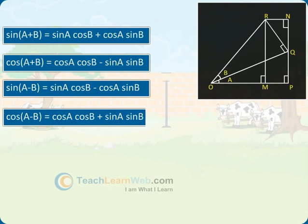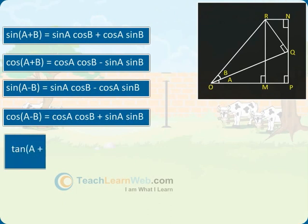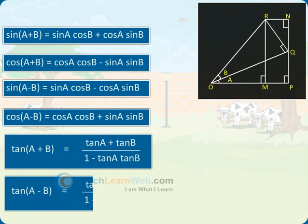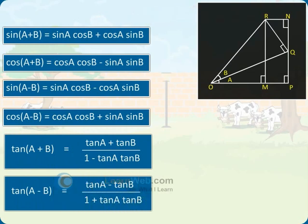Cosine of A minus B equals cos A cos B plus sine A sine B. Tan of A plus B equals tan A plus tan B divided by 1 minus tan A tan B. Tan of A minus B equals tan A minus tan B divided by 1 plus tan A tan B.